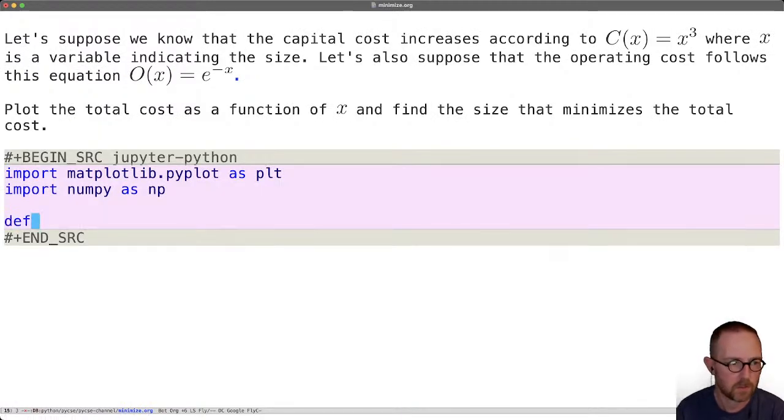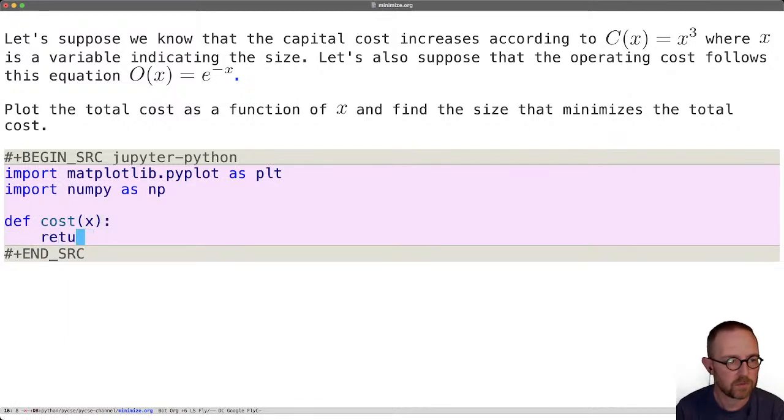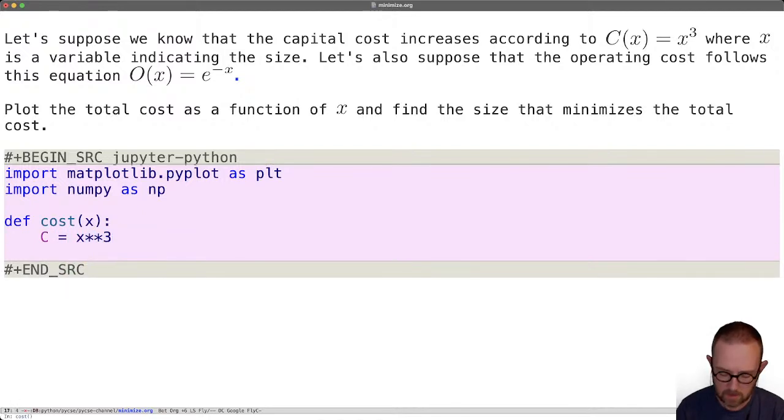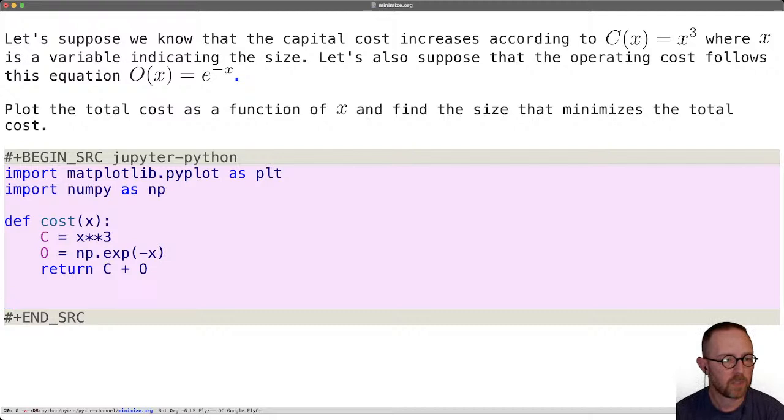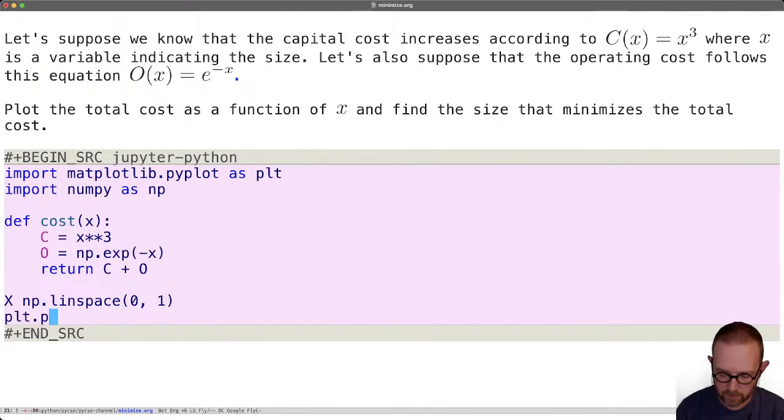So let's make our function first. def cost of x and we'll just, let's do it explicitly. The c is equal to x cubed and o is equal to np.exp of minus x. Then we can return c plus o and that would be the total cost. Now we're going to plot it over an array of values of x. So let's make a linspace, let's go from 0 to 1, and then we can just do plt.plot.